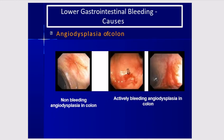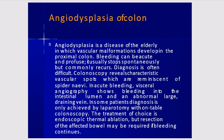Angiodysplasia of the colon is a disease of the elderly involving vascular malformation in the proximal colon. Bleeding can be acute and profuse but usually stops spontaneously, though it commonly recurs. Diagnosis is often difficult; colonoscopy sometimes reveals characteristic phosphorescent spots reminiscent of spider nevi. In acute bleeding, visceral angiography may help, and in some patients diagnosis is achieved only at laparotomy with on-table colonoscopy. The treatment of choice is endoscopic thermal ablation, though resection may be required if bleeding is recurrent.